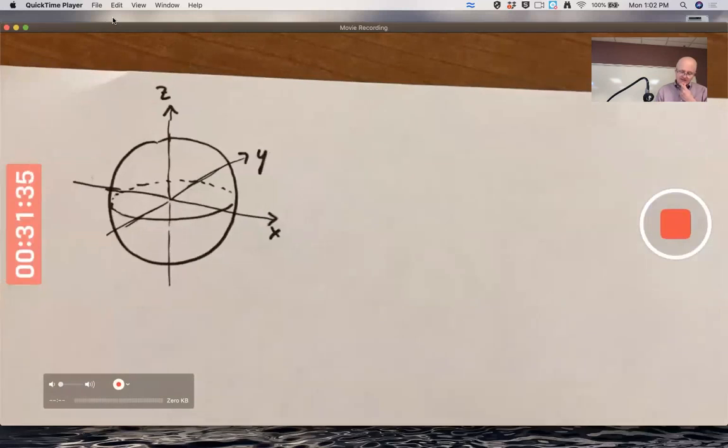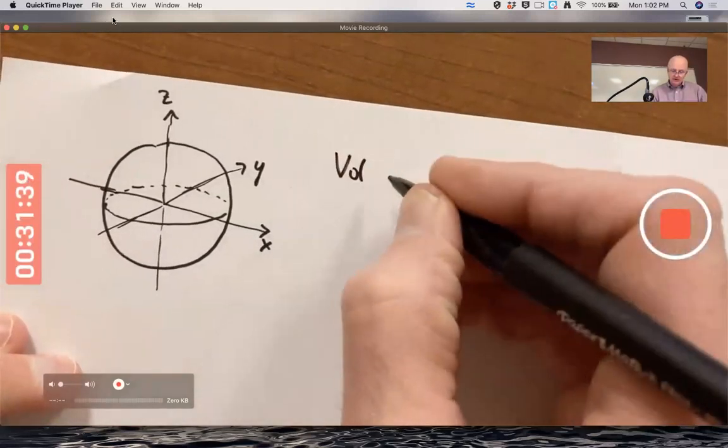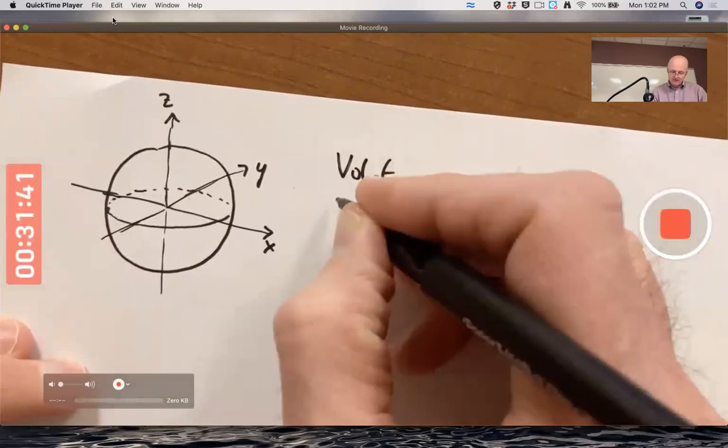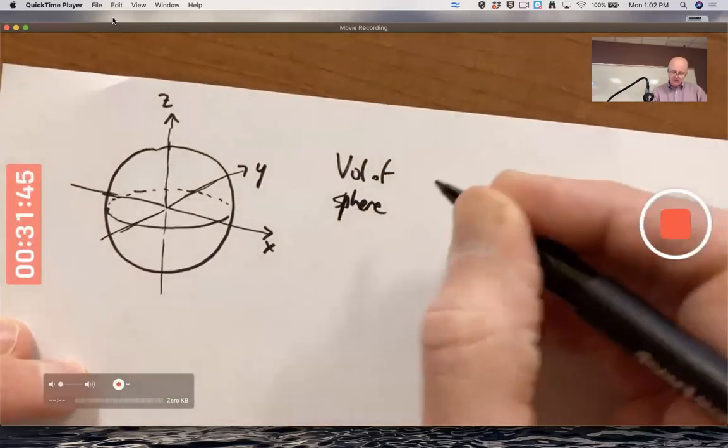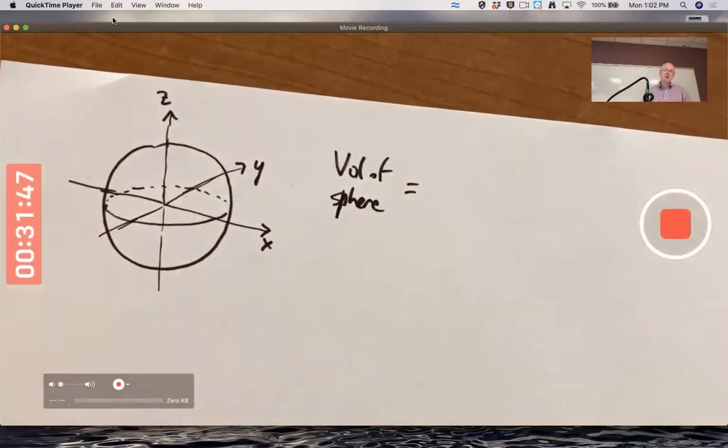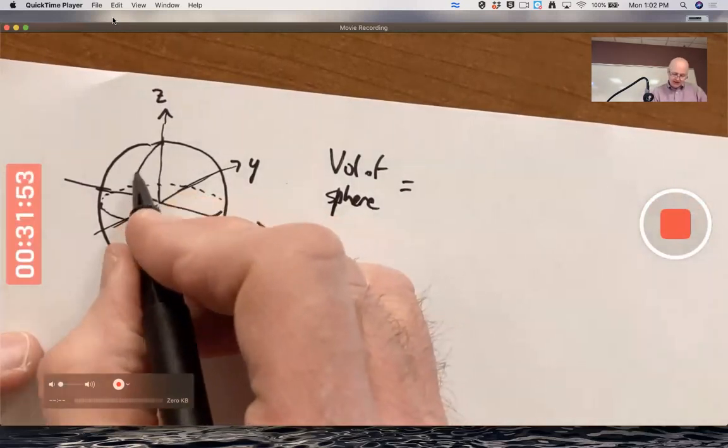So we're after the volume of the sphere. Volume of sphere. And I could do it as like finding the volume of one-eighth of the sphere, which would be like where x, y, and z are all positive, say here.